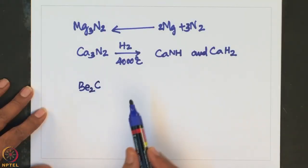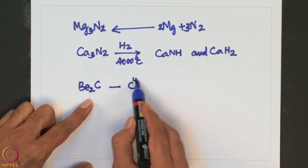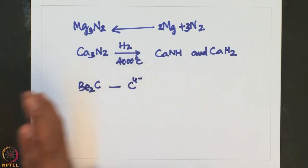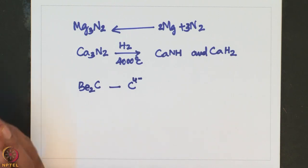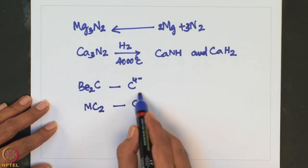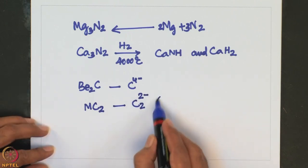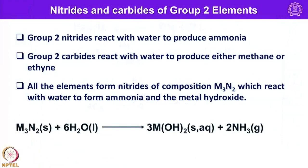Beryllium carbide formally contains the C4− ion. Carbides such as calcium carbide contain the C2^2− ion, which is essentially an acetylide ion. Group 2 nitrides react with water to produce ammonia, while group 2 carbides react with water to produce either methane or acetylene.